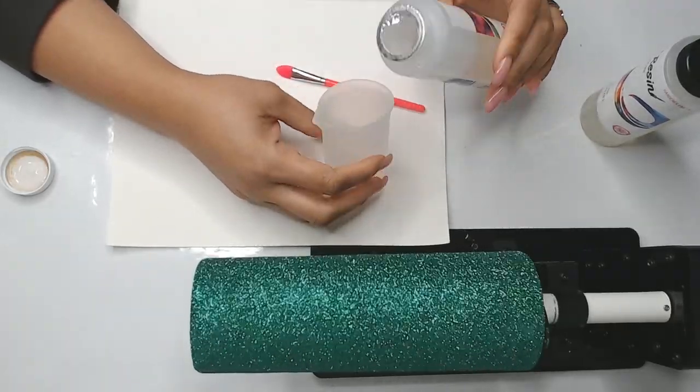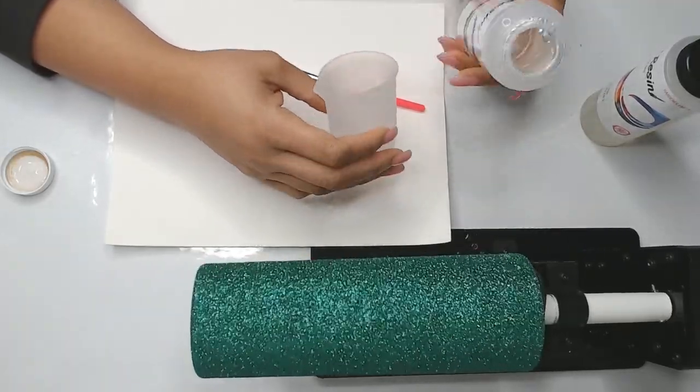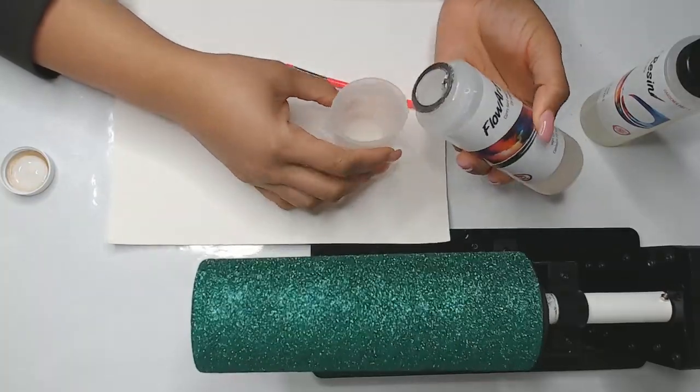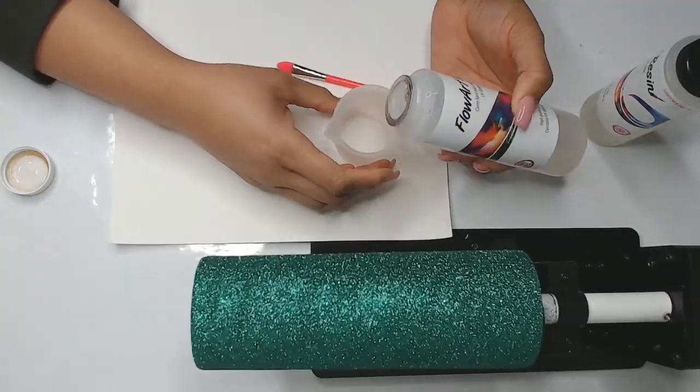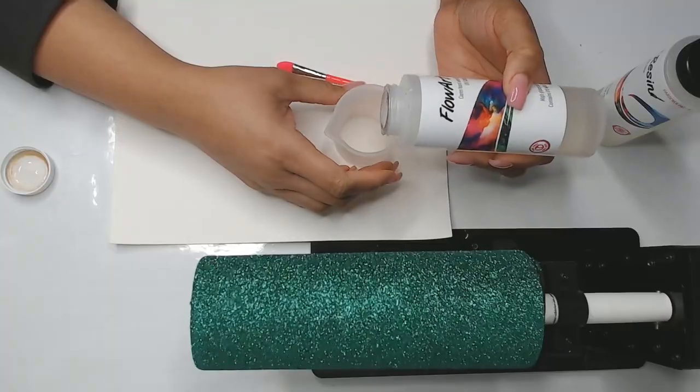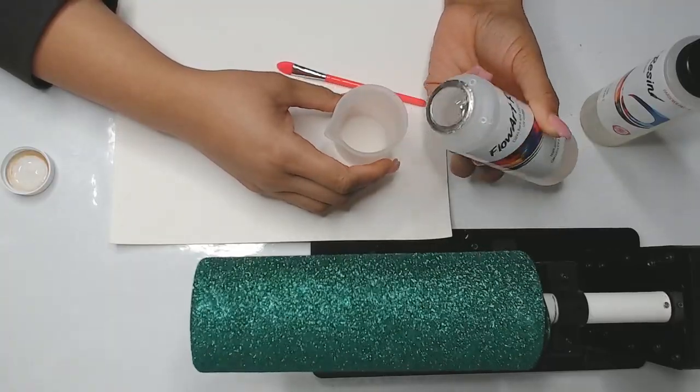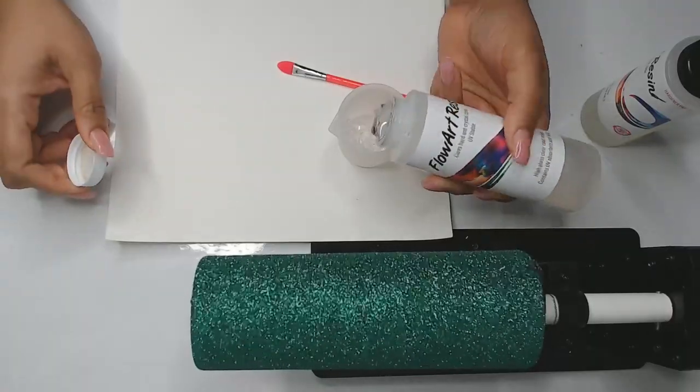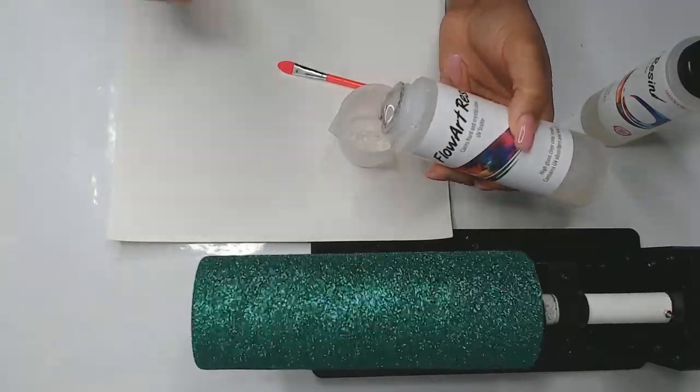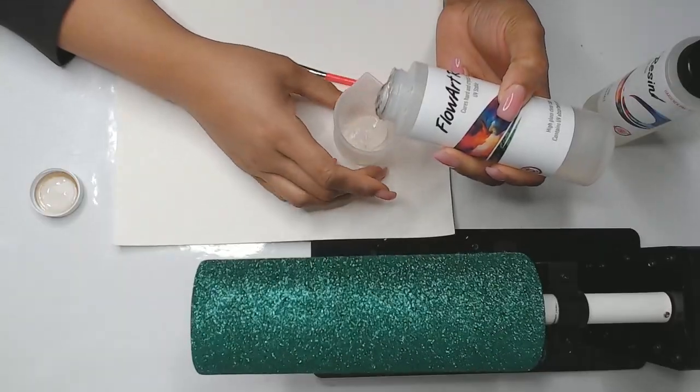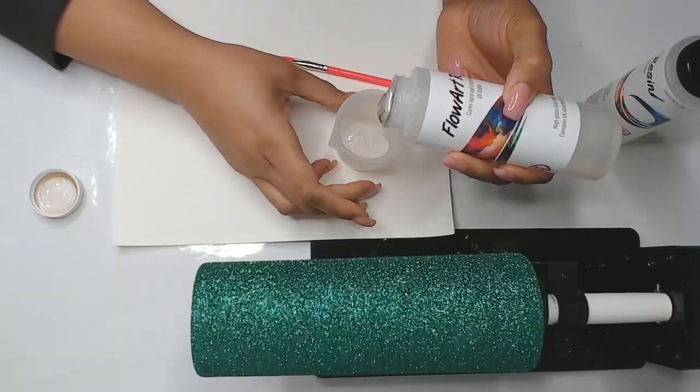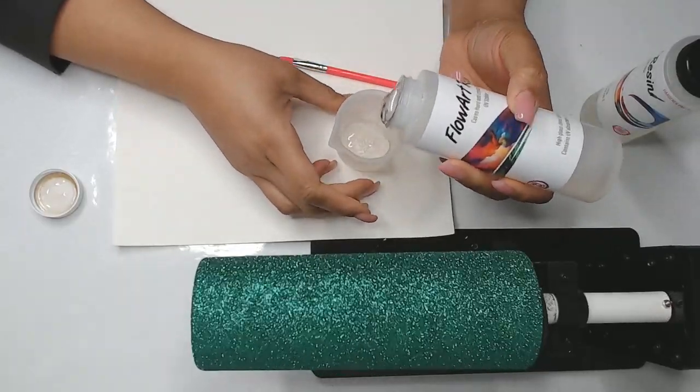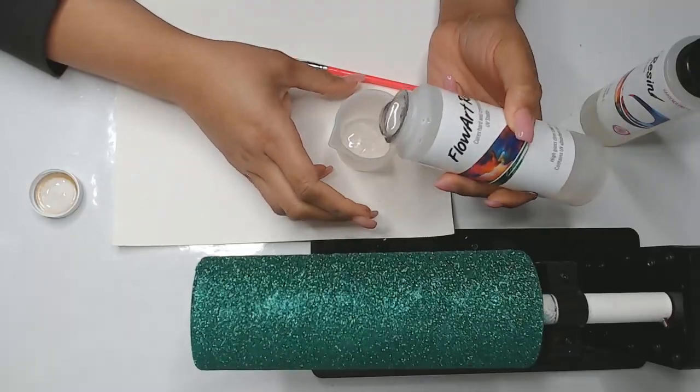First off I do not have a syringe or anything so I'm literally just going to pour this in and hope I get the measurements right. This is a 50-50 mix, one to one ratio, so one part resin and one part hardener. I'm going to need 20 milliliters so that will be 10 milliliters of part A and 10 milliliters of part B.